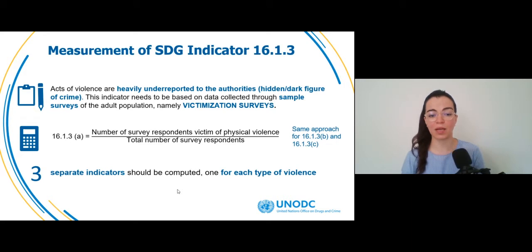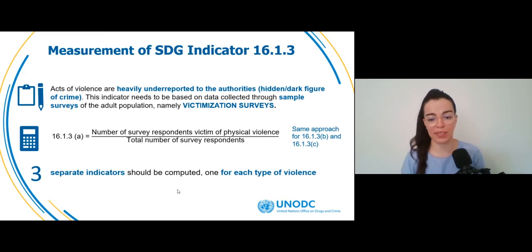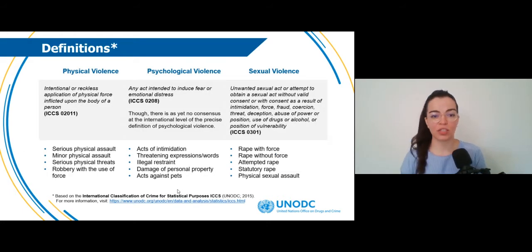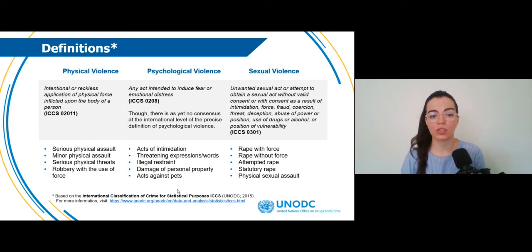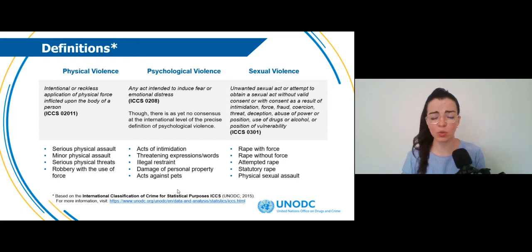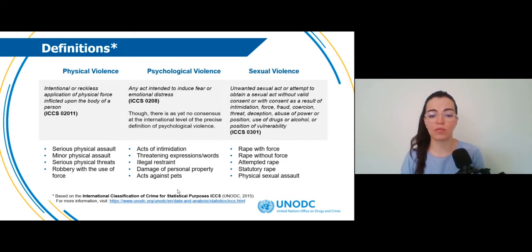Using data from such surveys, the indicator will be computed by counting the number of survey respondents who were victims of physical, psychological, or sexual violence in the past 12 months, divided by the total number of survey respondents. Three separate indicators should be computed and reported, one for each type of violence. The following definitions are based on the International Classification of Crime for Statistical Purposes, or ICCS, an internationally recognized tool for crime and criminal justice statistics, developed by UNODC and endorsed by the UN Statistical Commission and the Commission for Crime Prevention and Criminal Justice.